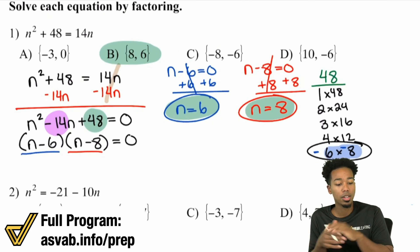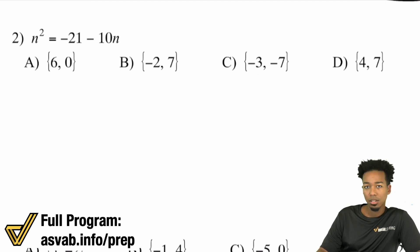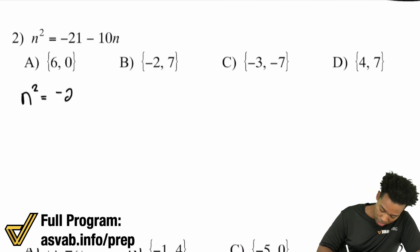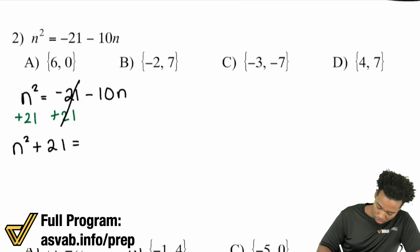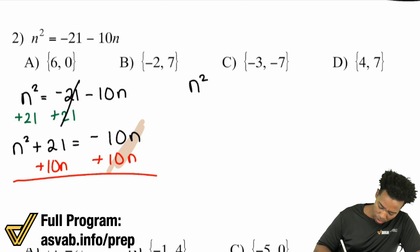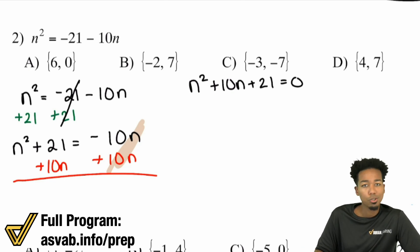Now let's look at a couple more practice problems. Number two — this one isn't that crazy. We have n squared equals negative 21 minus 10n. All you have to do is get a zero somewhere on the right or left side. So I'll add 21 on both sides: n squared plus 21 equals negative 10n. Then I'll add 10n on both sides — 10n doesn't mix with anything, so it's plus 10n plus 21 equals zero. Now we're good to go — we can factor, zero product property, and we're set.